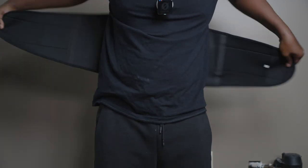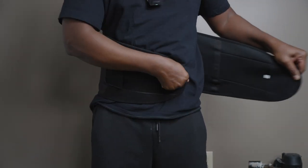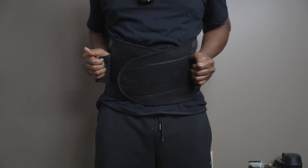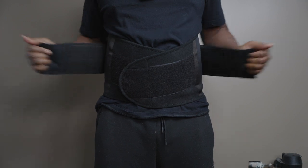So in order to put the back brace on what you want to do is put it around your waist. Now for the first strap you want to make sure you have that securely on and then you have the secondary straps which are elastic. You can pull them out.